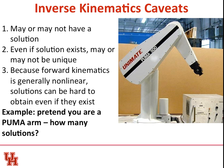Caveat number two, even if the solution exists, it may or it might not be unique. What I'm saying is that there might be multiple solutions for this. And three, because these forward kinematics, anytime you have a rotational joint, you're going to have a non-linear forward kinematics. Which means that these solutions are hard to obtain, even if we know that they exist. And so, first thing I want you to do, and this is a good time for you to stretch while you're watching this lecture. Pretend that you're a Puma arm.